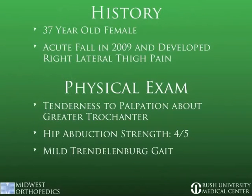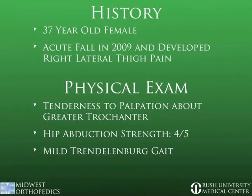Our patient is a 37-year-old female who sustained an acute fall and subsequently developed right lateral thigh pain. When she came into our office, she had tenderness just proximal to the greater trochanter, a decreased ability to abduct her leg when lying in the lateral decubitus position, and a mild Trendelenburg gait on physical exam.